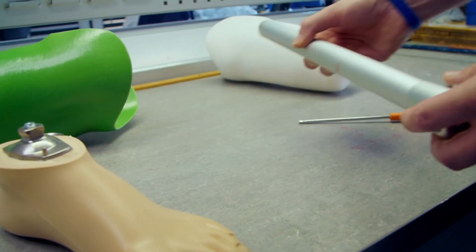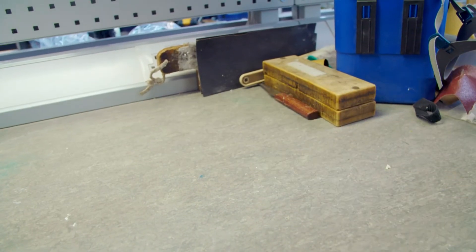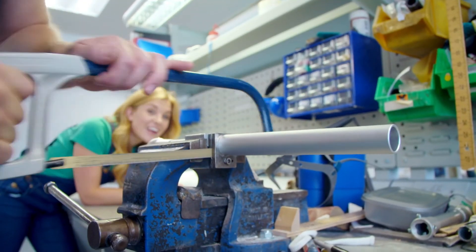Here we are. But first, Adam needs to cut the shin tube so the prosthetic leg can be the right length. And for that, he's using a saw. There it goes.